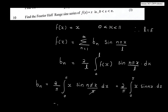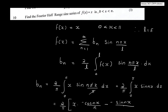Integrate it. The 2 by pi is outside. We apply integration by parts to x into sin nx. That gives minus x cos nx by n. The derivative of x is 1, and the integral of minus cos nx by n gives minus sin nx by n squared.